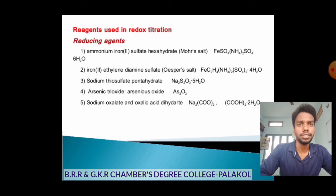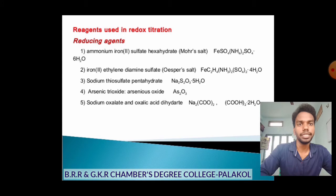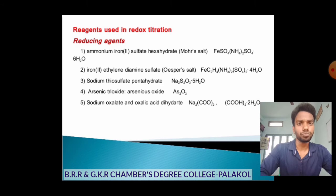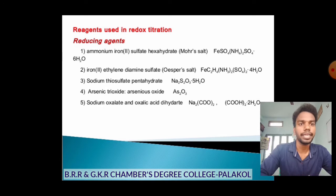Now for reducing agents: potassium ammonium iron(II) sulfate hexahydrate — well known as Mohr's salt — contains Fe²⁺, which is converted to Fe³⁺ (ferric) during the redox reaction. It is a reducing agent, as the reducing agent itself undergoes oxidation. Other reducing agents include iron(II) ethylenediamine sulfate, sodium thiosulfate pentahydrate, arsenic trioxide, sodium oxalate, and oxalic acid dihydrate.